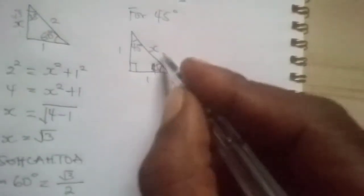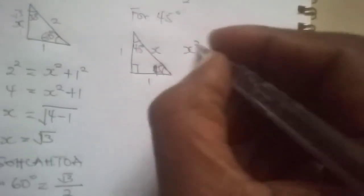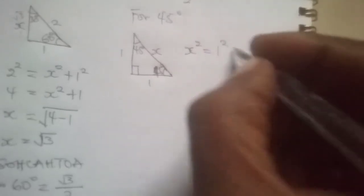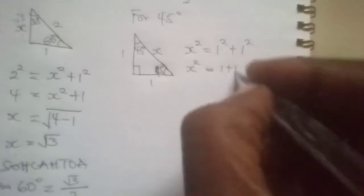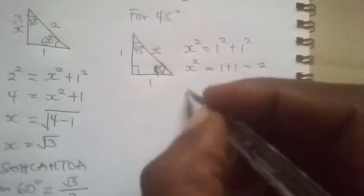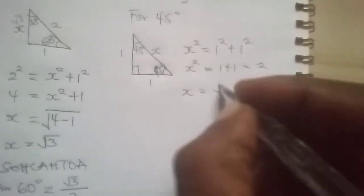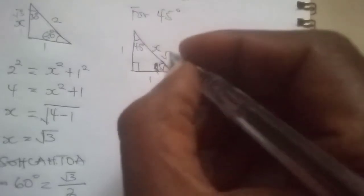So for us to find x, using Pythagoras, x squared is equal to 1 squared plus 1 squared. So x squared is equal to 1 plus 1, which is equal to 2. Which means x alone is root 2. So here is root 2.